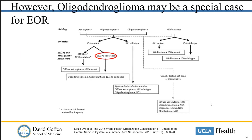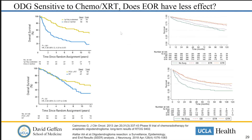On the other hand, oligodendroglioma tumors might be a special case for extent of resection, although this is somewhat controversial. These are tumors that have IDH mutations and a 1p19q co-deletion. We know they are among the more sensitive primary brain tumors to chemotherapy and radiation, and long-term studies from the Cairncross group have shown that PCV chemotherapy combined with radiation led to pretty good long-term survival among these patients.